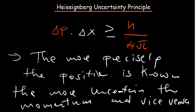So if you look at our formula, this tells us: Delta P is your uncertainty in momentum, Delta X is your uncertainty in position, and that is Planck's constant over 4 pi. So: ΔP · ΔX ≥ h / 4π.